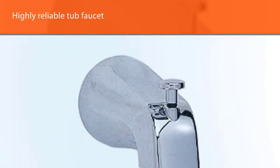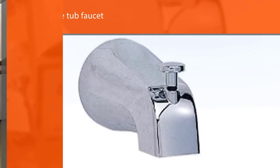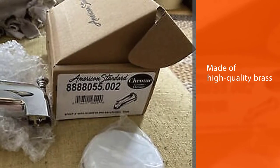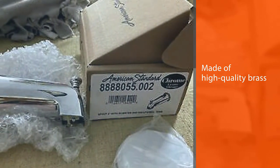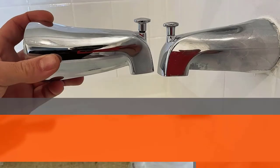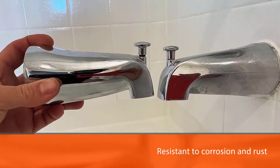This highly reliable tub faucet is made of high-quality brass, which is durable, sturdy, and resistant to corrosion and rust. It comes in a polished chrome finish with a reflective surface that exudes elegance and pride in your bathroom. However, the surface should be cleaned regularly to prevent it from being marred by water spot stains.